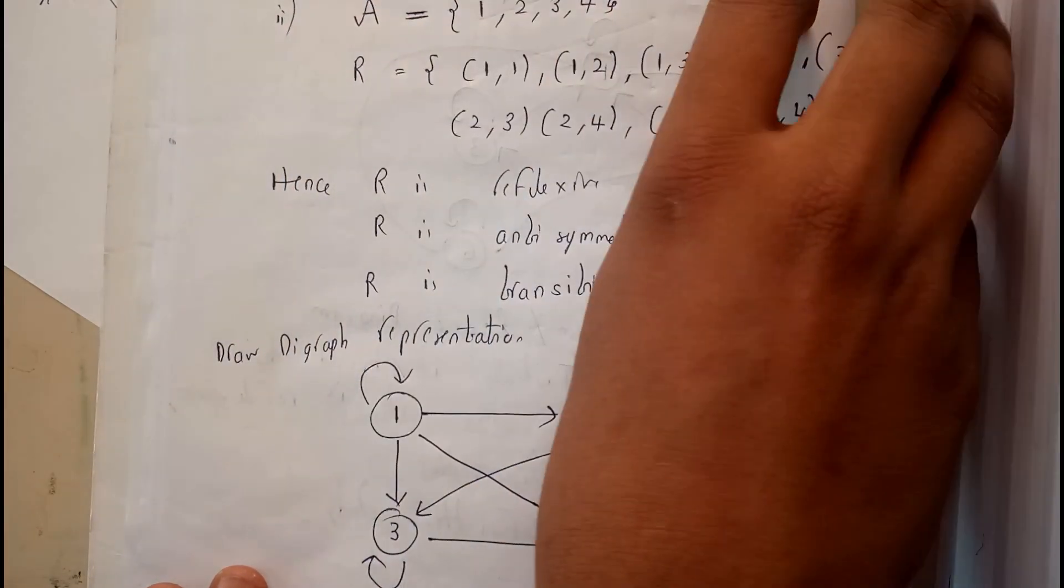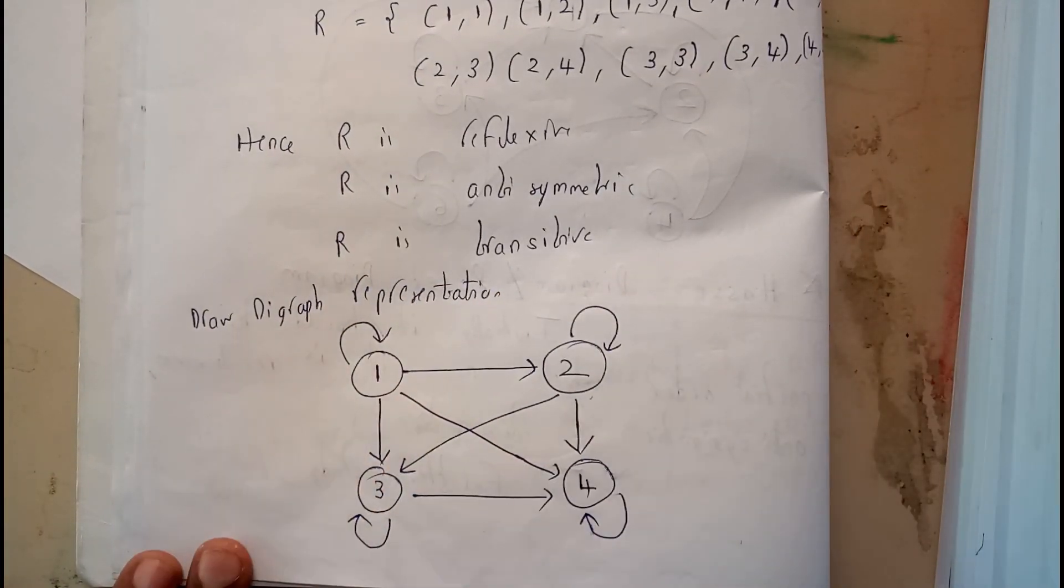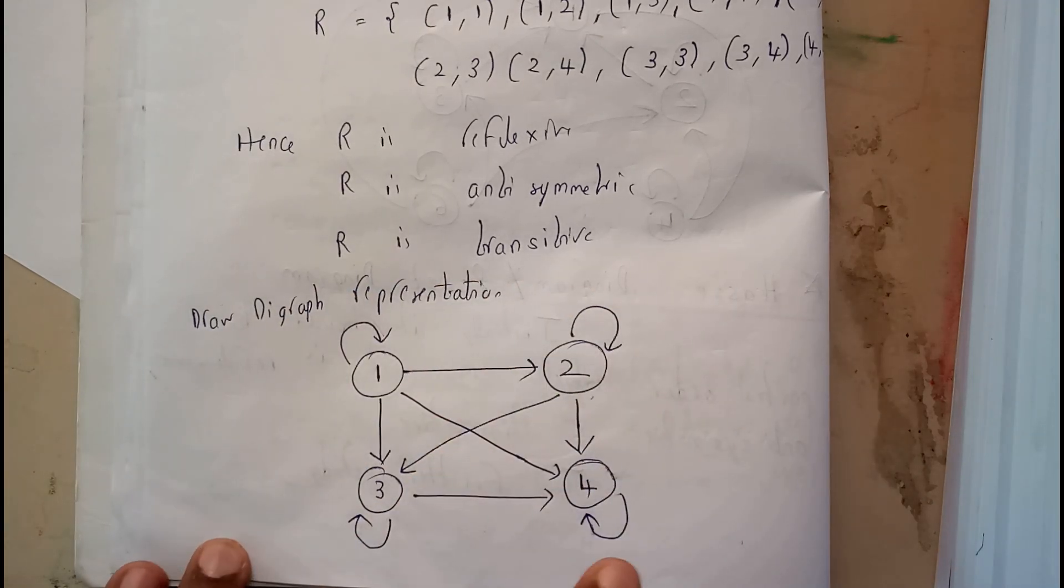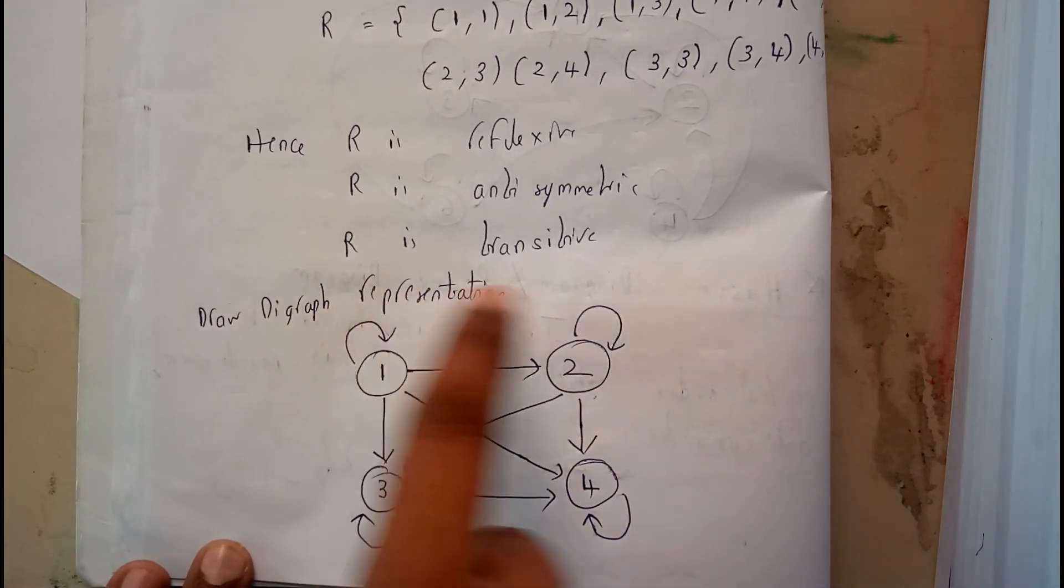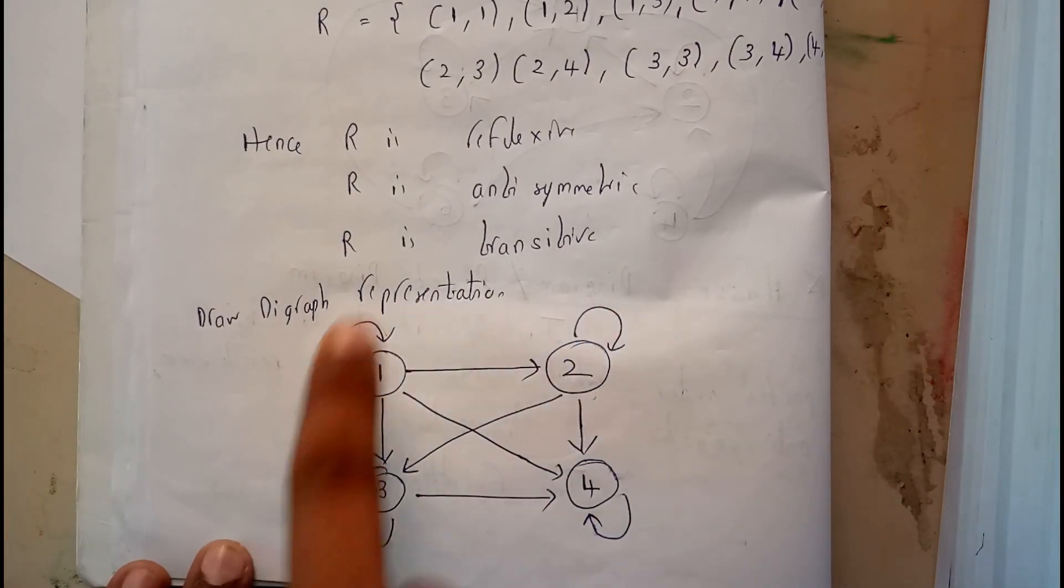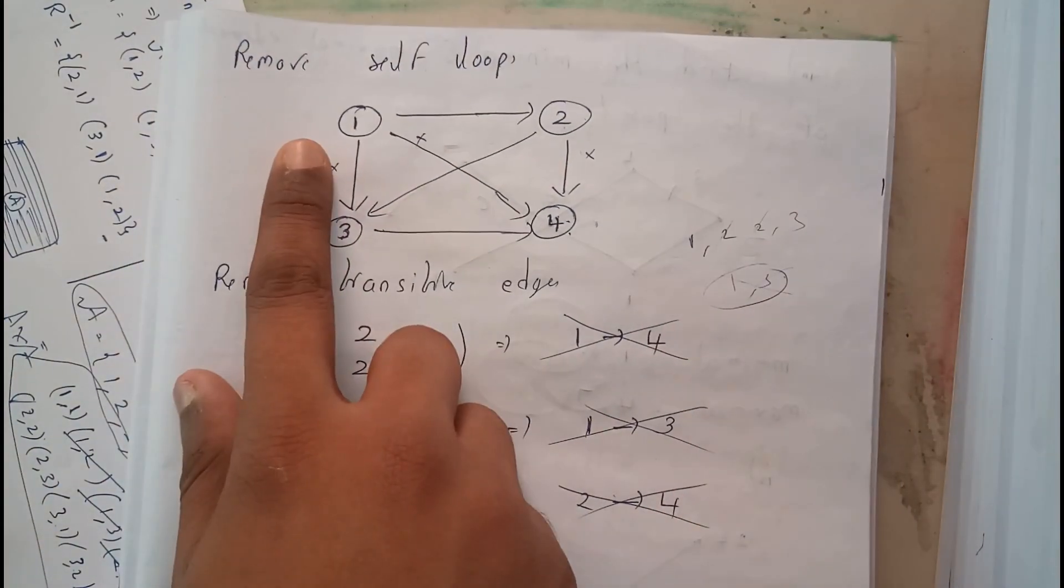This will be the graph as there is 1,1, 2,2, 3,3, 4,4. So this will be the graph. I have told you the first step is that remove the self loops. Remove all the 4 self loops. Then the diagram will be like this.